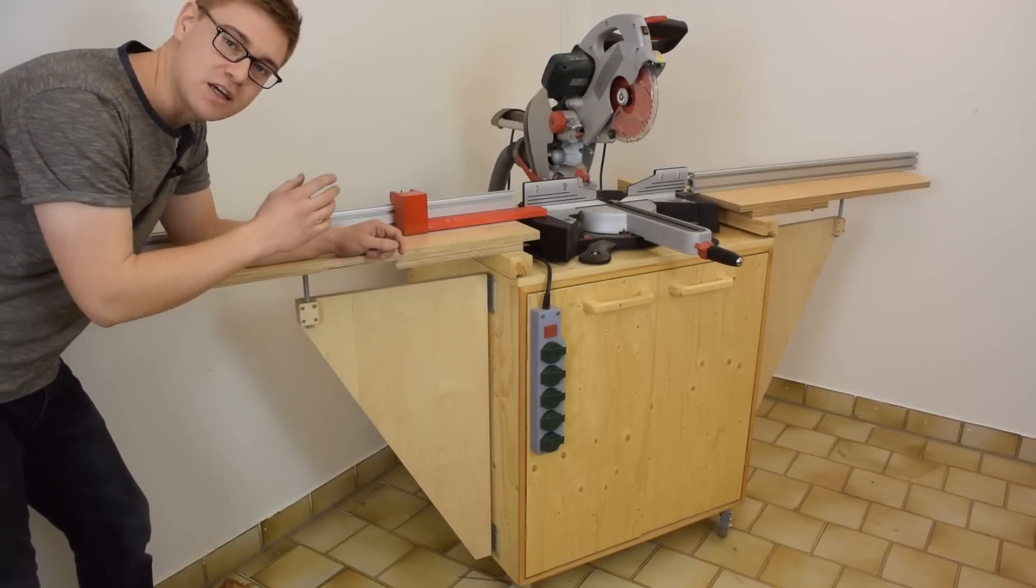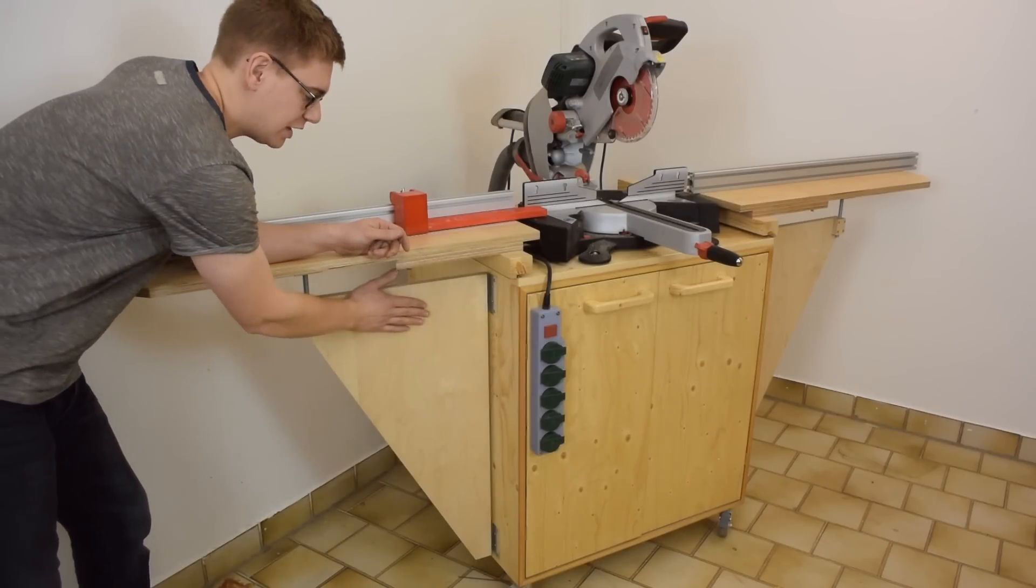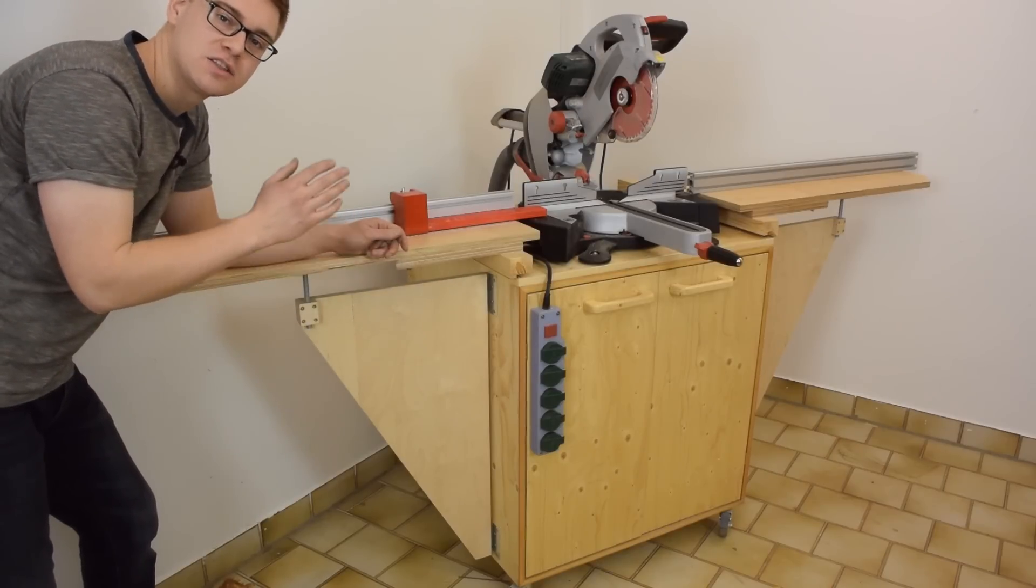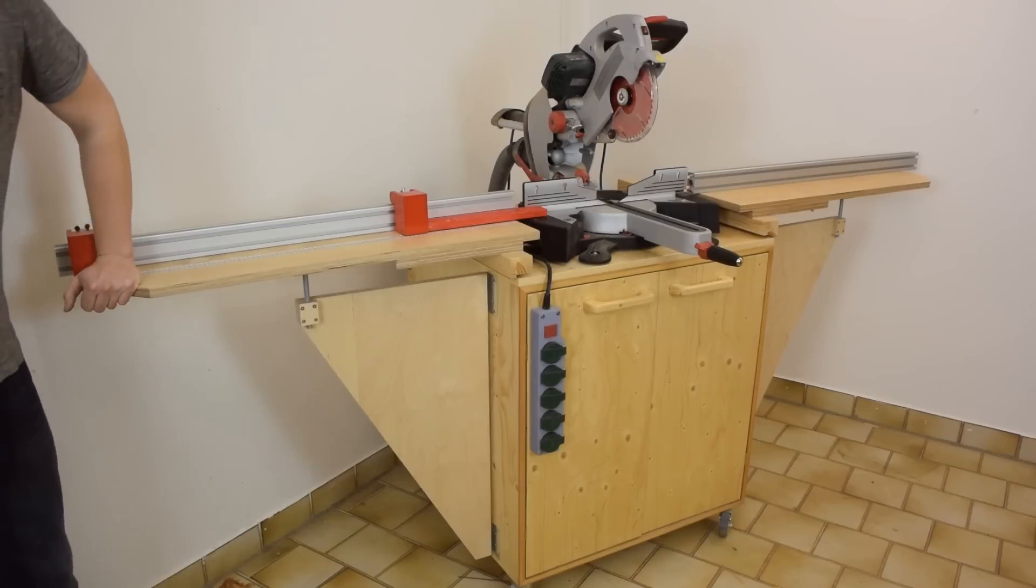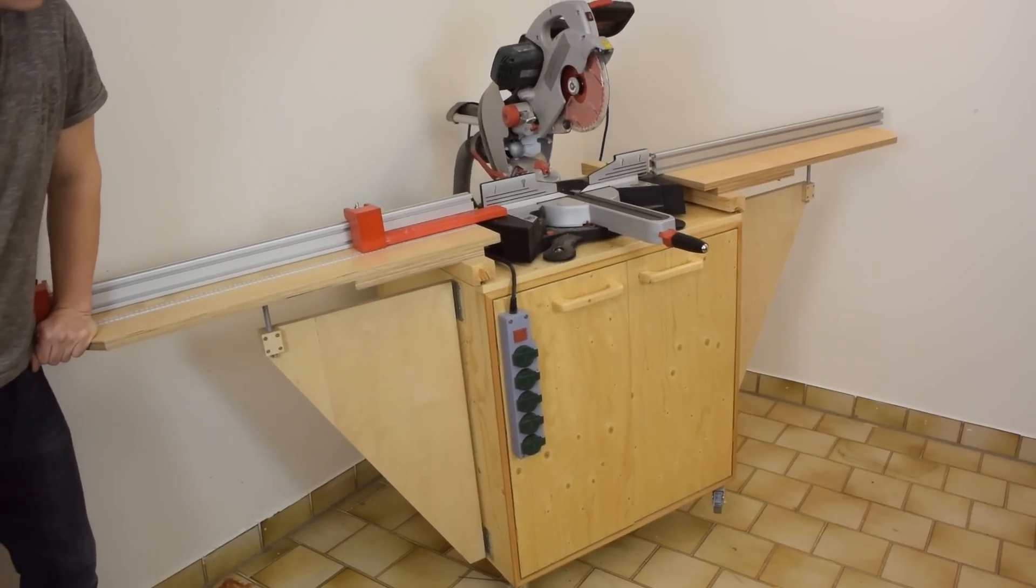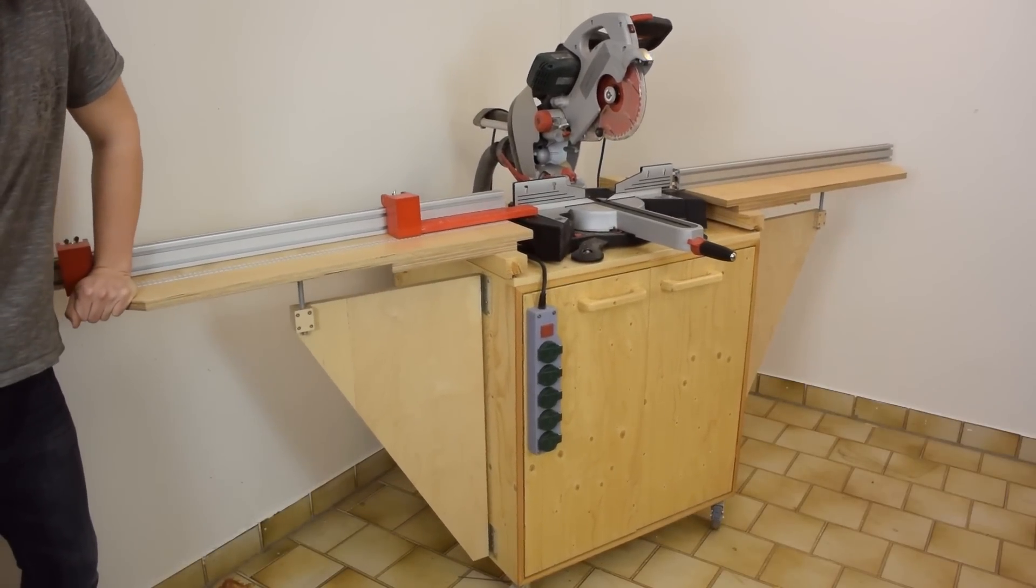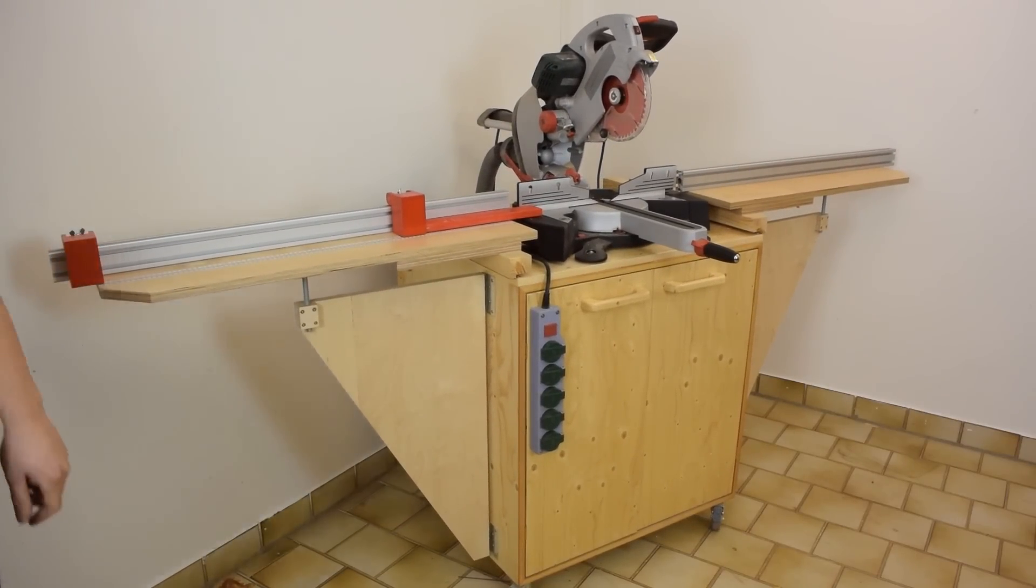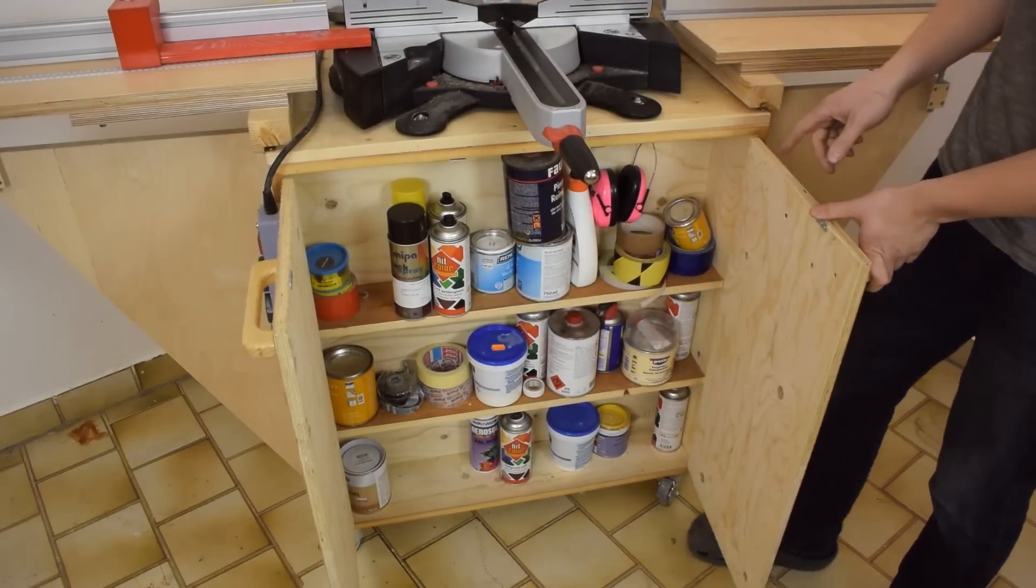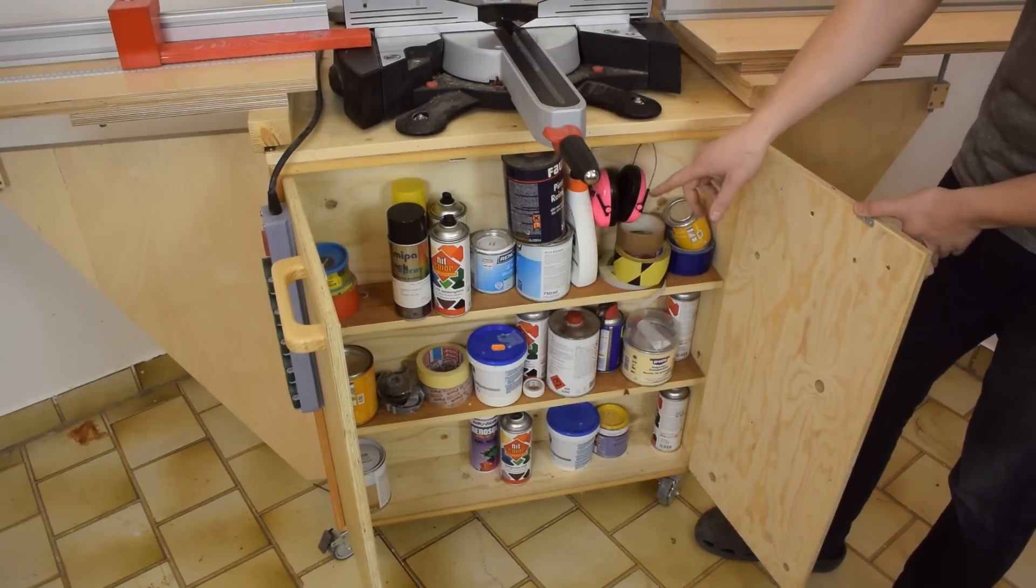This cabinet doesn't have a back panel. Instead I put what would normally be the back panel in one plane with these triangles, and that makes the entire thing extremely stiff and strong. The downside is I only have a very shallow shelf in here, but that's actually quite convenient for storing tape and paint and stuff like that.